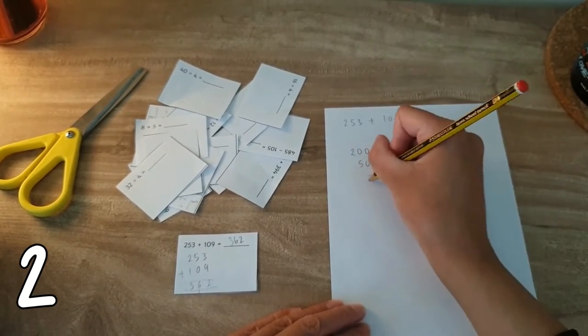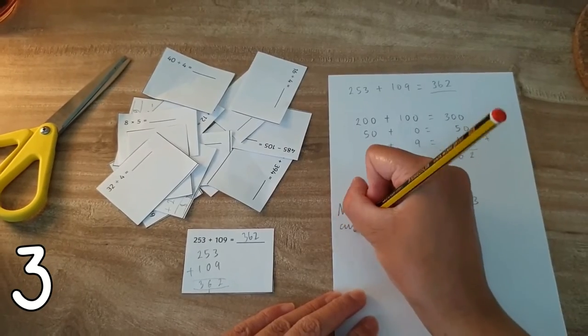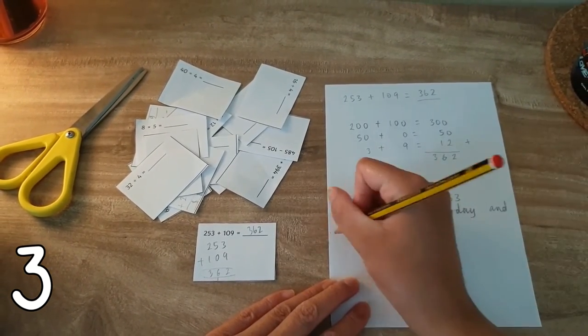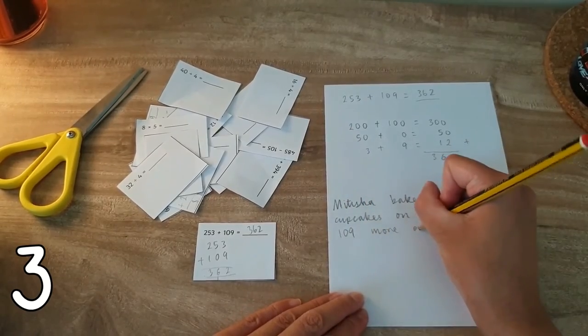And number three, get your children to choose one of the cards and create a word problem for a peer to solve. You can encourage children to think carefully and consider using units of measure when writing theirs.